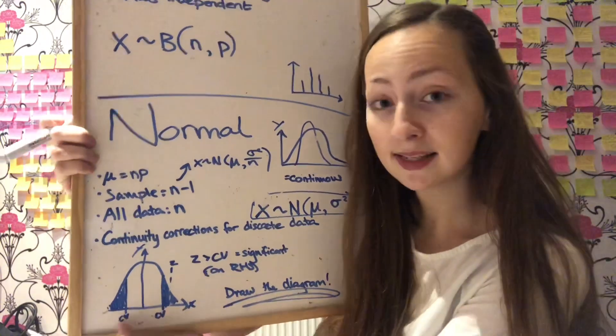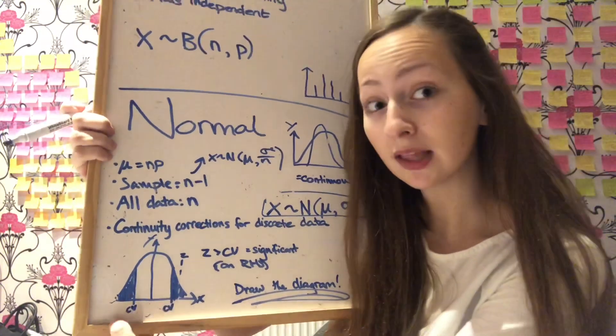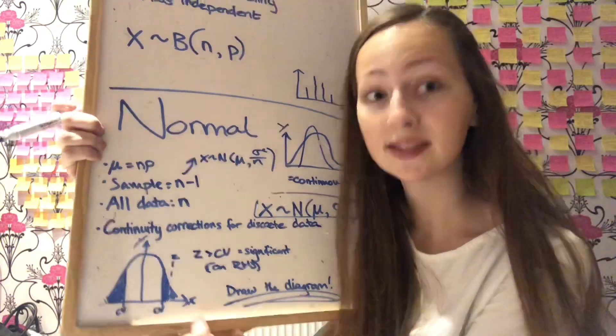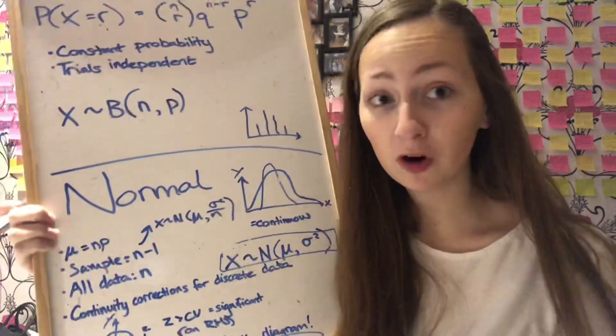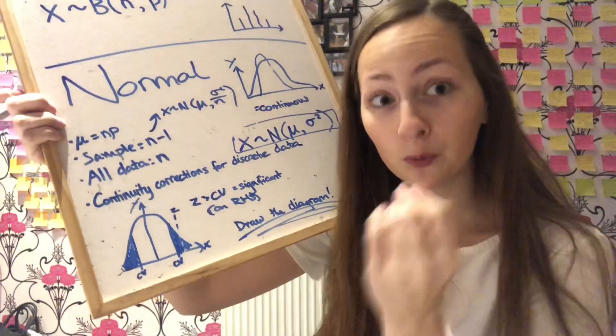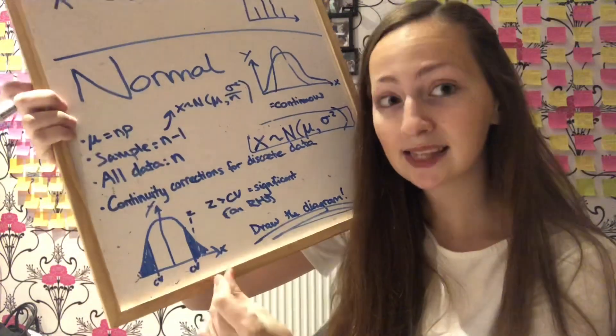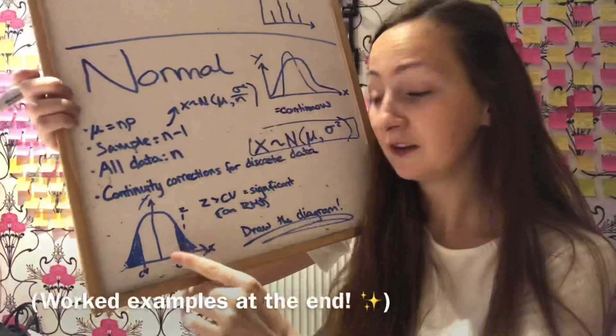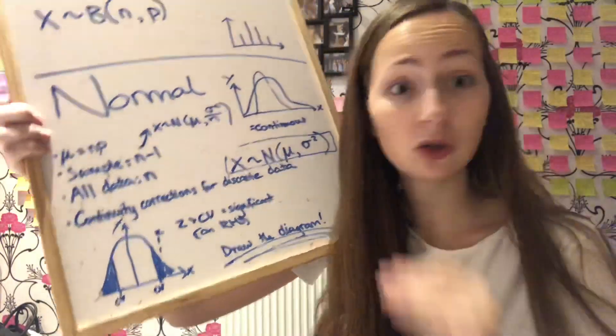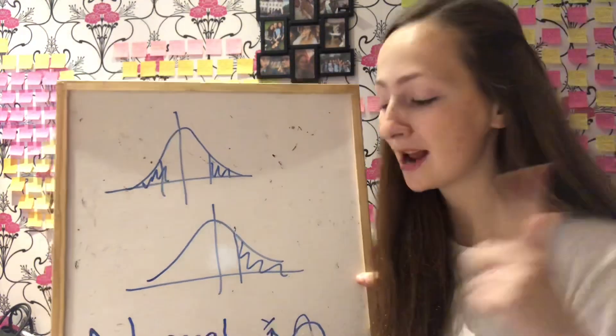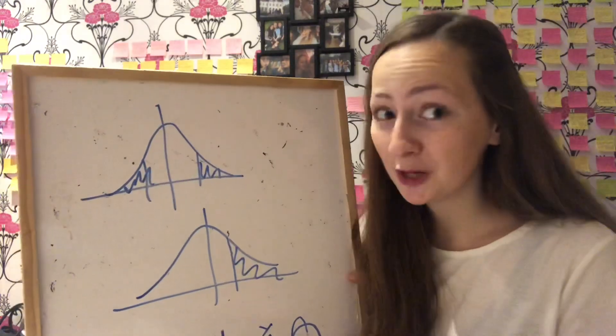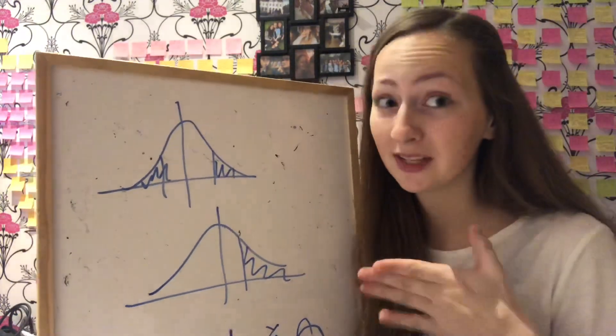If the z value is less than the critical value CV on the left hand side it's significant. Or if it's greater than on the right hand side it's significant. The easiest way to understand that is not by learning the words, it's just by drawing the diagram. If the z value, the number you've actually worked out, is inside the shaded region, it is significant. Whereas if it's in this white section, it's not significant. Another thing you need to go through on that checklist is whether the test is two-tailed or one-tailed. If it is two-tailed, the diagram would look like this. If it is one-tailed, the diagram will look like that. If the diagram is two-tailed, you will have to half your significance level.